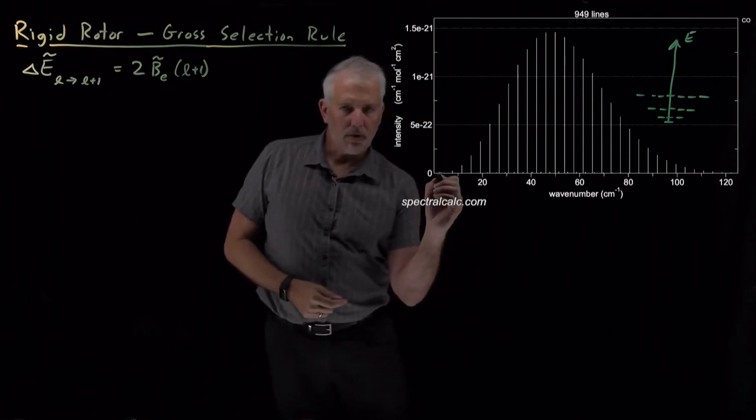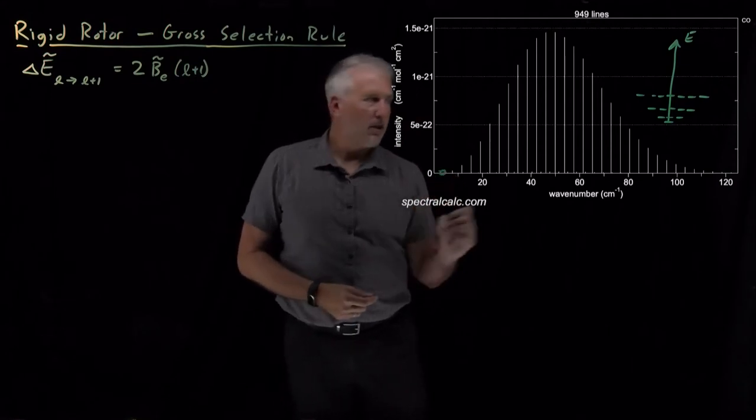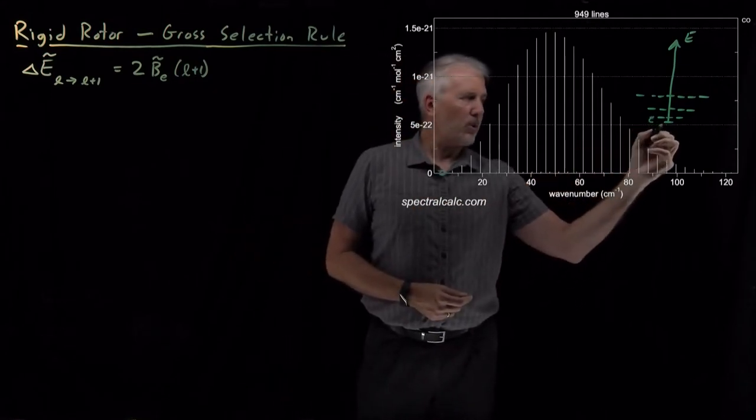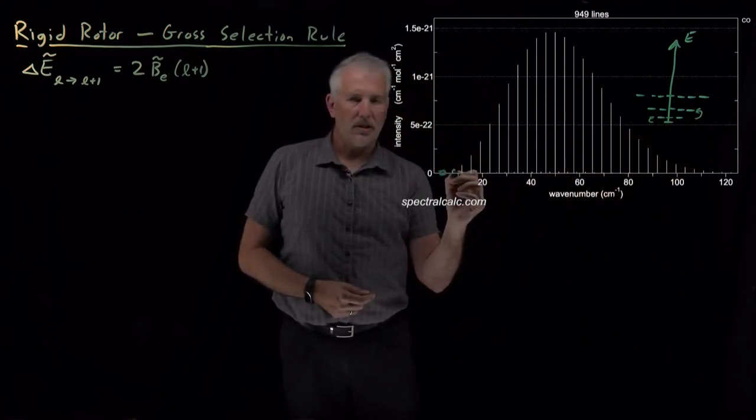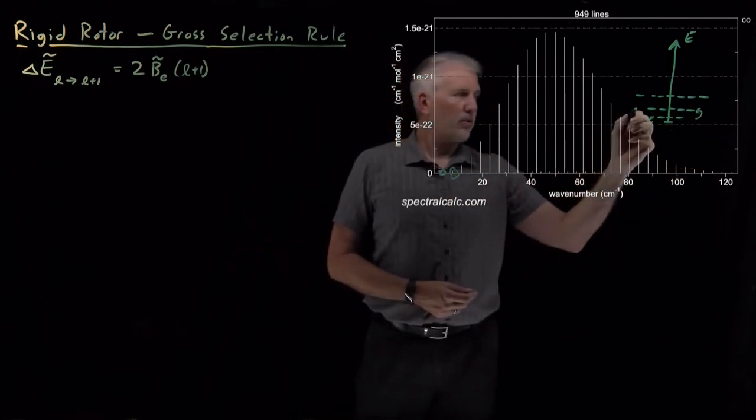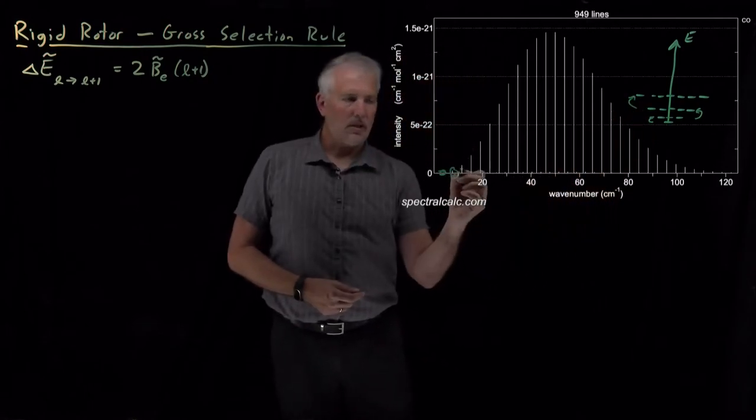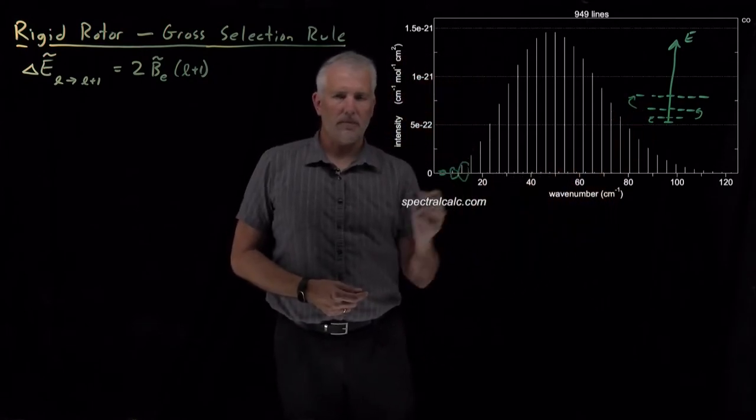So the small peak that you can barely see right here would correspond to the 0 to 1, there's another peak corresponding to the 1 to 2 transition, that's this one, the 2 to 3 transition would be this one, and so on.